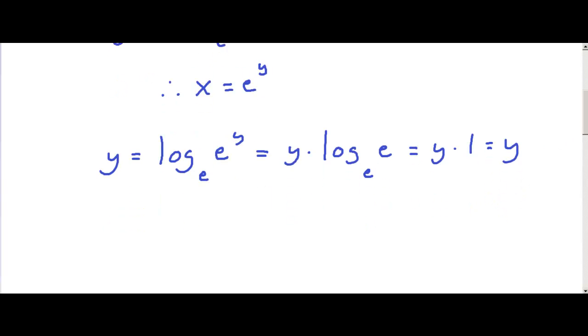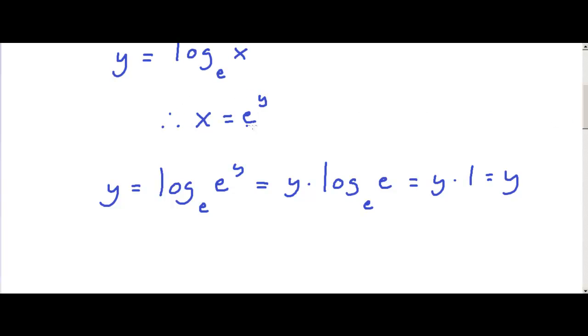So, we know that x is e to the power of y. Now, if x is e to the power of y, then dx over dy equals e to the power of y.